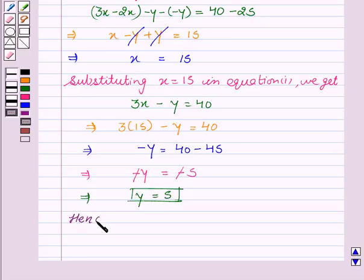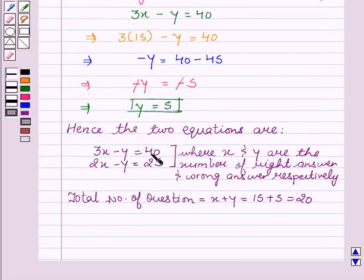Hence, the two equations are 3X minus Y equal to 40 and 2X minus Y equal to 25, where X and Y are the number of right answer and wrong answer respectively. Total number of questions equal to X plus Y equal to 15 plus 5 equal to 20.